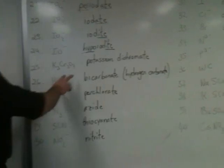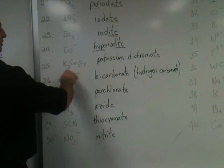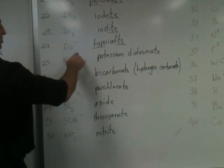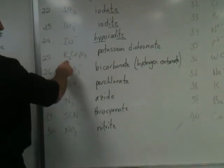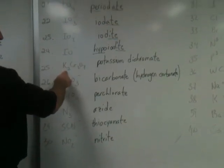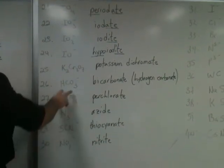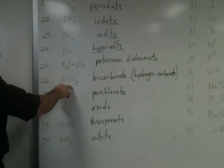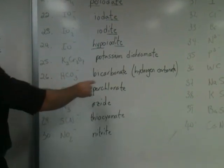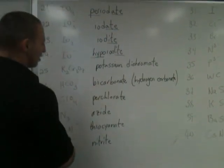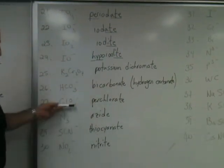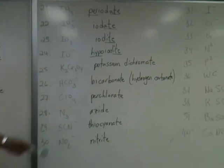We have here dichromate, which is minus two, and it's counterbalanced by two potassium ions, so it's potassium dichromate. This is the bicarbonate anion, also known as hydrogen carbonate. Here's perchlorate.